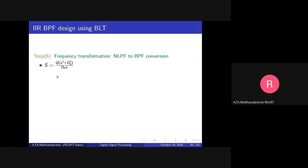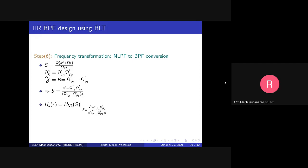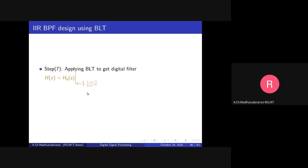Once we have the normalized low pass filter H(s), we apply the LP-to-BP frequency transformation by replacing s with Q times (s² + omega_0²) / (omega_0 × s), where omega_0² equals omega_p1' times omega_p2', and omega_0 / Q equals B, the passband bandwidth (omega_p2' minus omega_p1'). This gives us the analog band pass filter H(s). Then we convert it to the digital band pass filter using bilinear transformation by replacing s with (2/T) times (1 - z^(-1)) / (1 + z^(-1)). Since T cancels out, we can take T equals 2 for convenience.